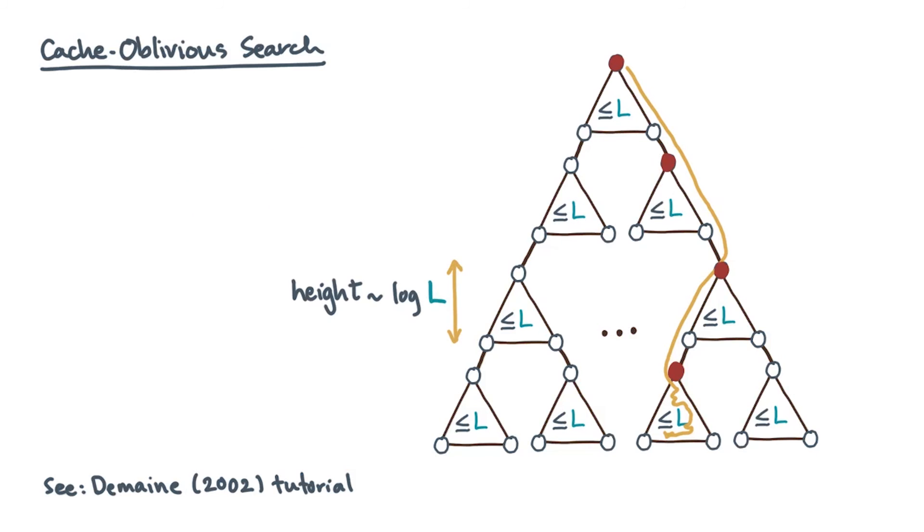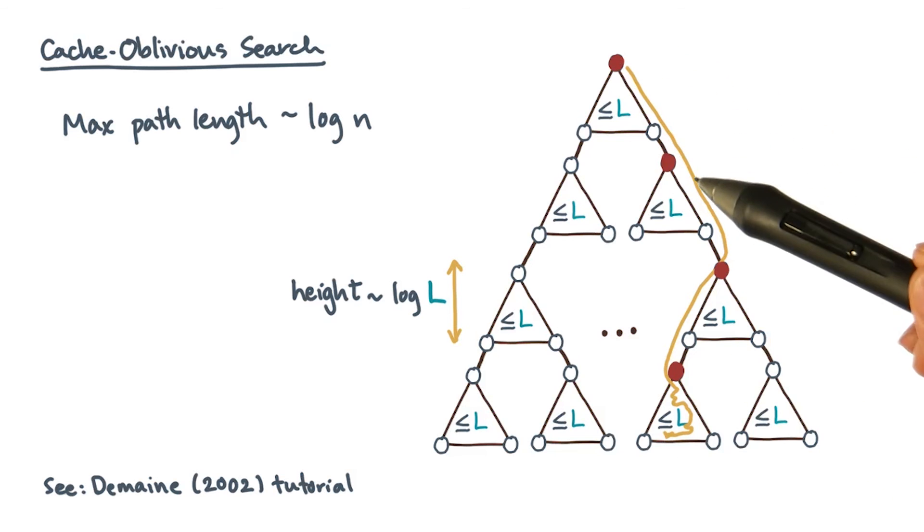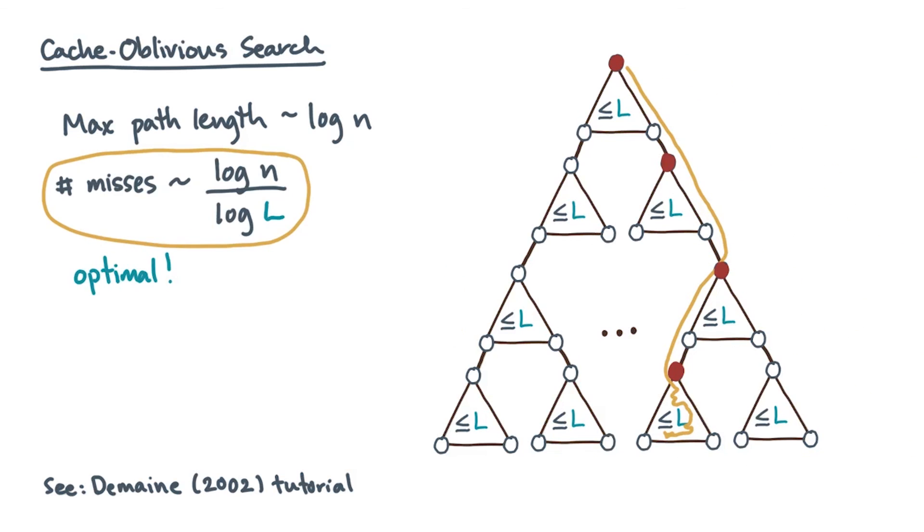Now the maximum height of one of these little cache line size subtrees is log l. So, starting at the root of the tree, how many of these size l subtrees will you visit? Well, the height of the tree is log n. So, on any path from root to leaf, you'll encounter log n over log l subtrees. That's totally awesome, because that is optimal.